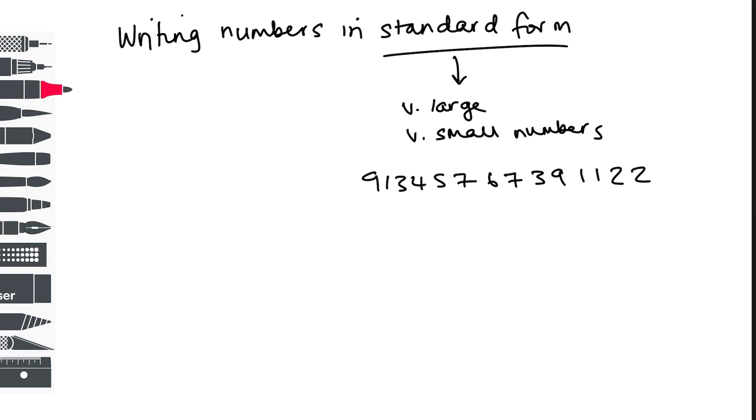What you need to do is get a number between 1 and a number less than 10, and then you multiply it by 10 to a power. And remember, a power is a small number that goes up here.